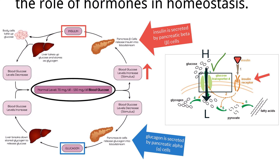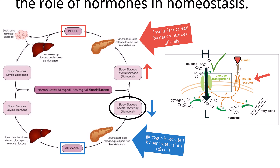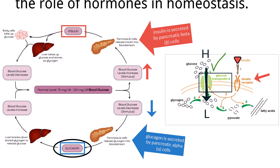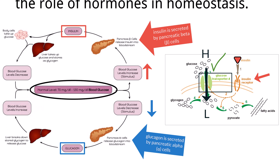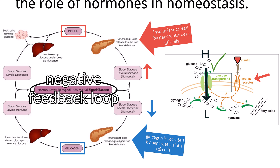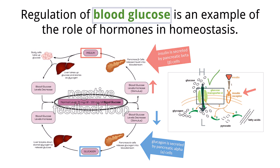Conversely, when blood glucose levels fall, such as during exercise or fasting, alpha cells release glucagon. Glucagon circulates in the blood and acts primarily on the liver, stimulating the breakdown of glycogen into glucose, which is then released into the bloodstream to raise blood sugar levels. These hormonal responses operate through a negative feedback loop, ensuring that blood glucose levels remain within a narrow, healthy range essential for cellular function and overall metabolic stability.